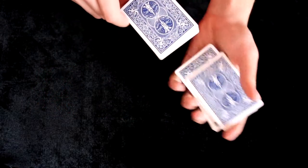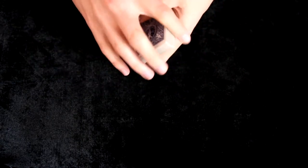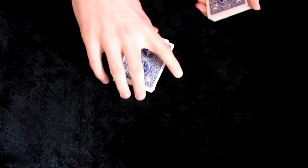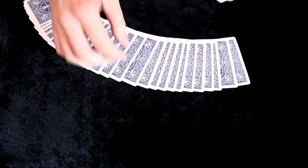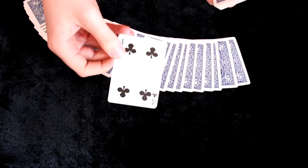So this trick is really easy to do and completely impromptu so you don't need any setup and the deck can be shuffled by spectator. Now the spectator will cut the cards and from this pile he or she will select one card so let's say in this case it's four of clubs.